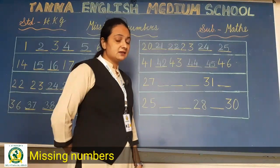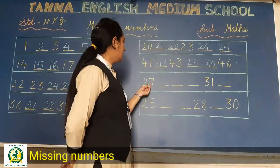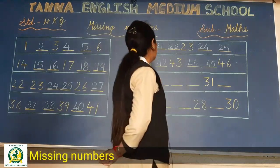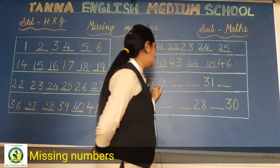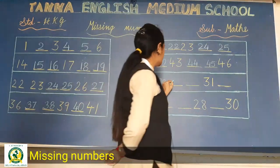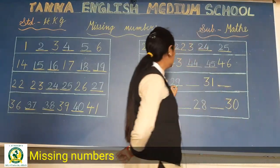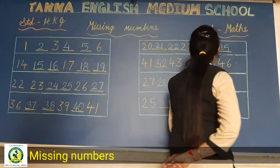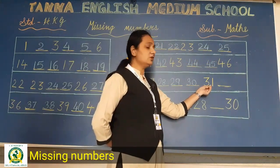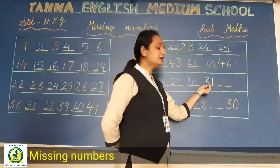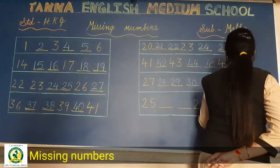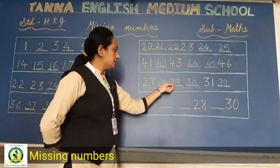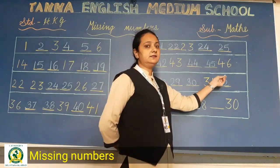Jisne bhi nahi kiya hai, please kar le. Okay. Now see 27 is written. So what will come after 27? 28. Then 29. After 29 what will come? 30. So write 30. After 30? Yes, 31. And what will come after 31? 32. So write here 32. 27, 28, 29, 30, 31, 32.